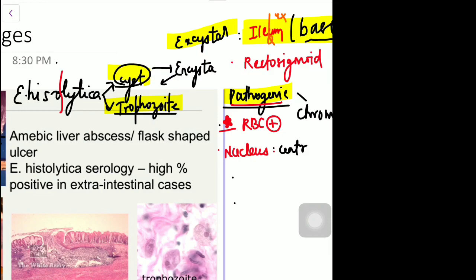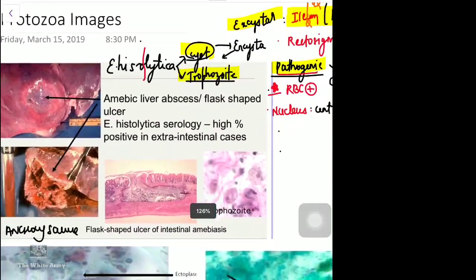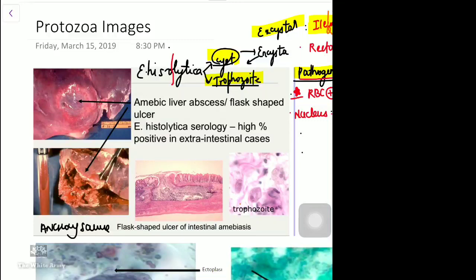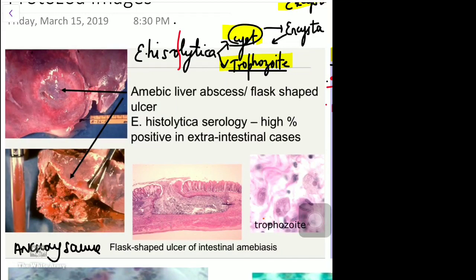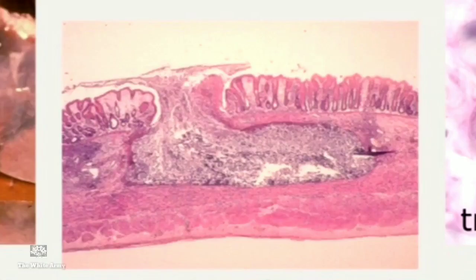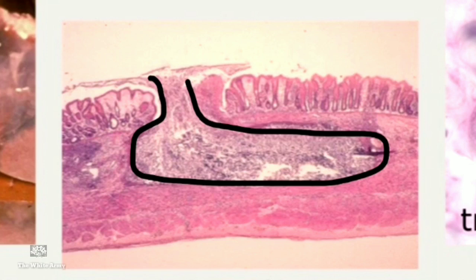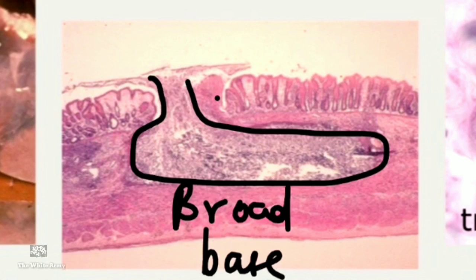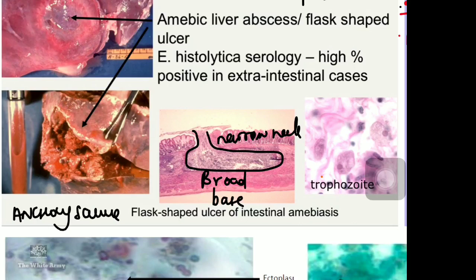Encystation — the conversion of trophozoite into cyst — occurs at the rectosigmoid junction. The trophozoite produces various toxins and enzymes such as histolysin, which invades the mucosa and causes ulcers at the level of the rectosigmoid junction or rectum. This ulcer has a broad base and a narrow neck, and is called the flask-shaped ulcer, characteristic of intestinal amoebiasis.